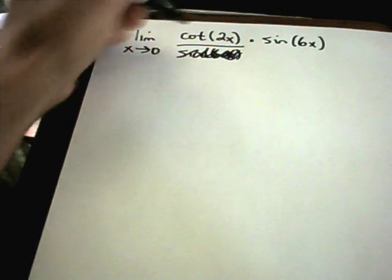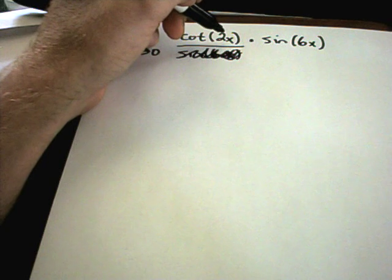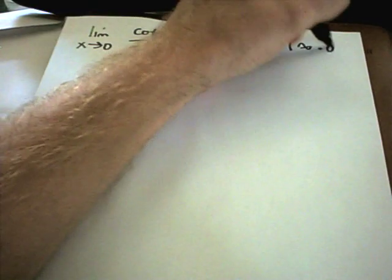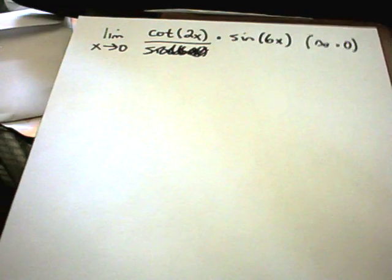As x approaches 0, you'll get cotangent of 0. And if you think about the graph of cotangent, this actually goes to infinity. Sine of 0 is 0. So again, we're getting this indeterminate form, infinity times 0.